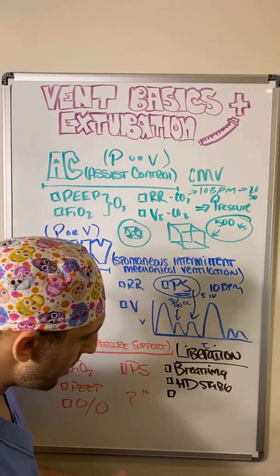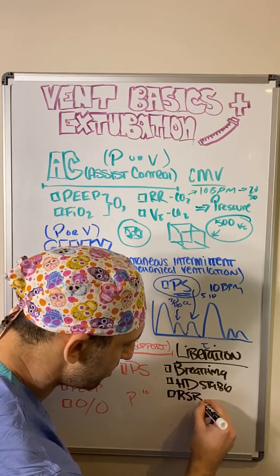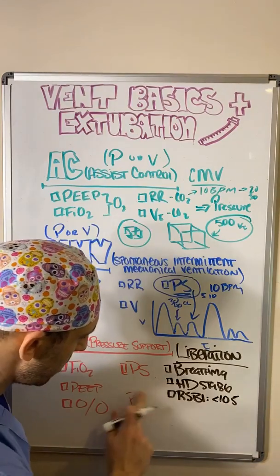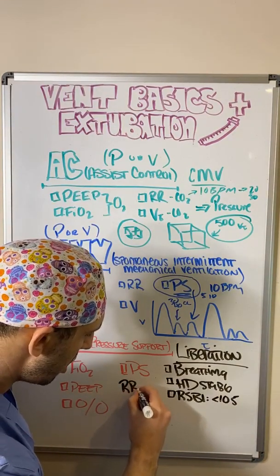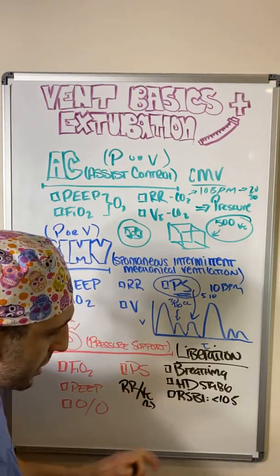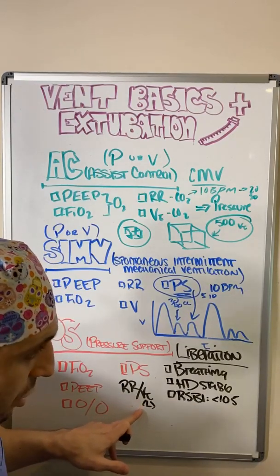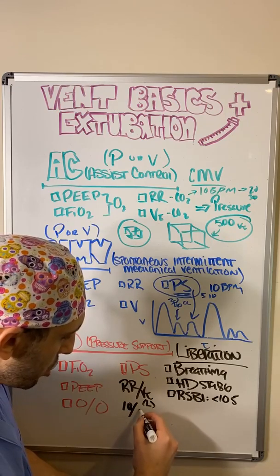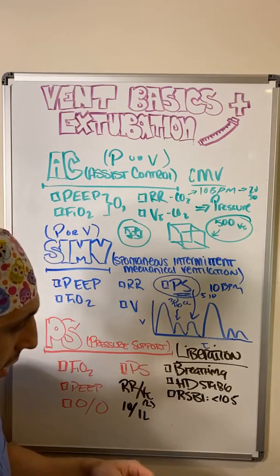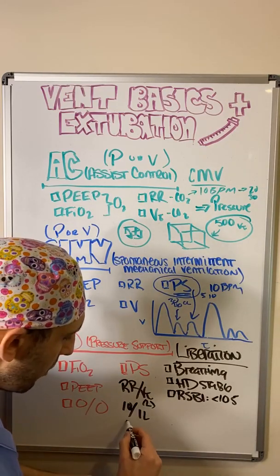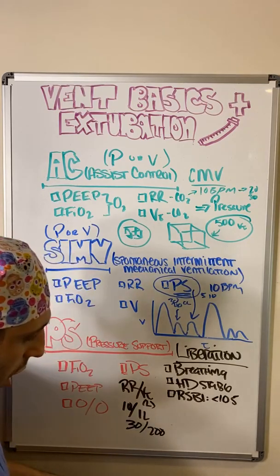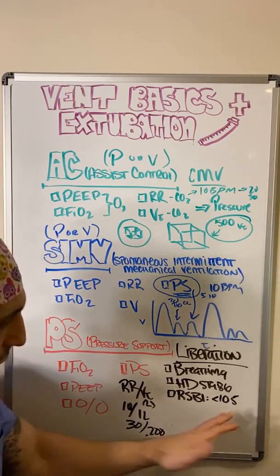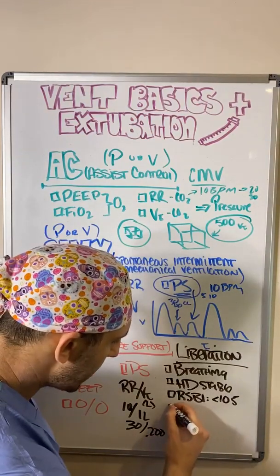The next thing is our RSBI — the rapid shallow breathing index — and we're looking for values less than 105. The equation is respiratory rate divided by tidal volume in liters. I remember it as 'rapid shallow' — rapid comes first. For example: rate of 10, tidal volume of 1 liter gives an RSBI of 10, well below 105. But rate of 30 with tidal volumes of 0.2 liters gives an RSBI greater than 105, and the patient will more than likely fail extubation.